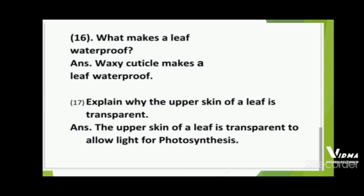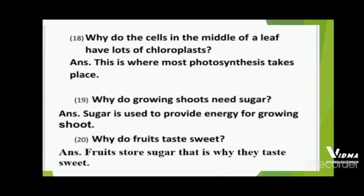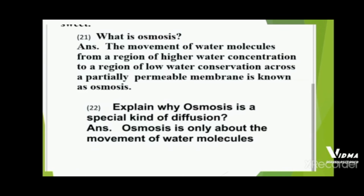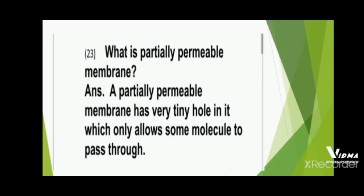Explain why the upper skin of the leaf is transparent. Why do the cells in the middle of the leaf have lots of chloroplasts? Why do growing shoots need sugar? Why do fruits taste sweet? What is osmosis? Explain why osmosis is a special kind of diffusion. What is a partially permeable membrane? These are all the questions you have to complete in your biology copy.